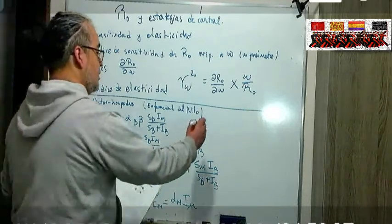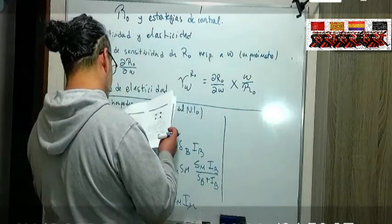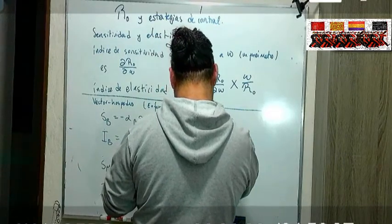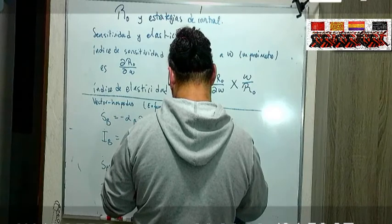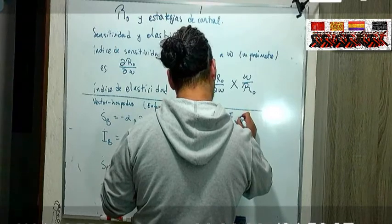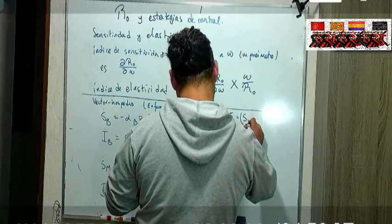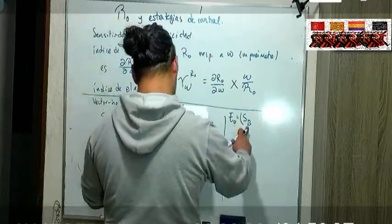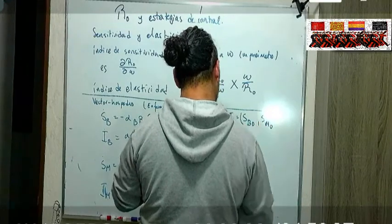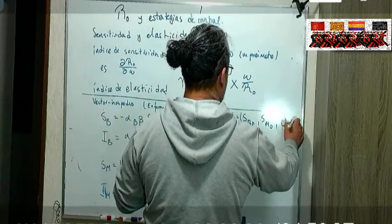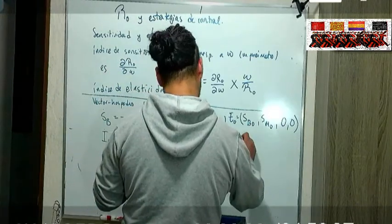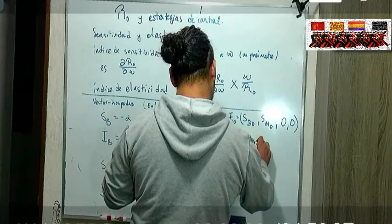Y tienen cierta tasa de mortalidad que es la misma para los infectados y los no infectados. Entonces aquí cómo van a hacer la f, la b y la k.